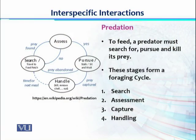Predation involves four different stages, forming a foraging cycle. The first stage is called search, second is assessment, third is pursuit, and fourth is handling. This foraging cycle involves the predator searching for food, pursuing the food, and then at the last stage, killing its prey.